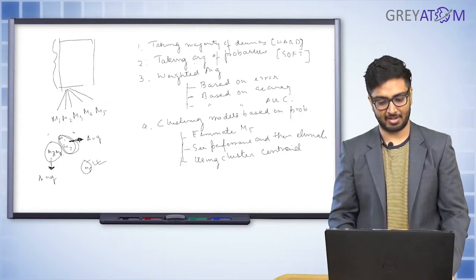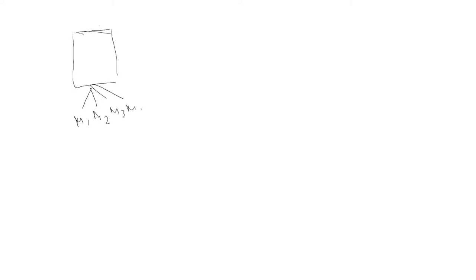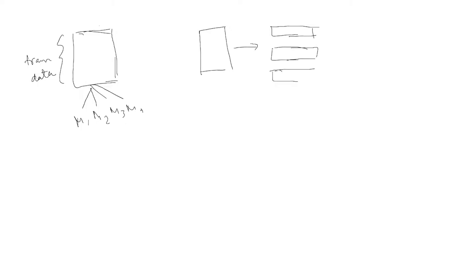In naive aggregation we had one entire training data and trained multiple models — M1, M2, M3, M4 — on that same data. Now what we're going to do instead is split the training data into multiple parts and train a model individually on each part, so M1 trains on part one, M2 on part two, M3 on part three, and M4 on part four.